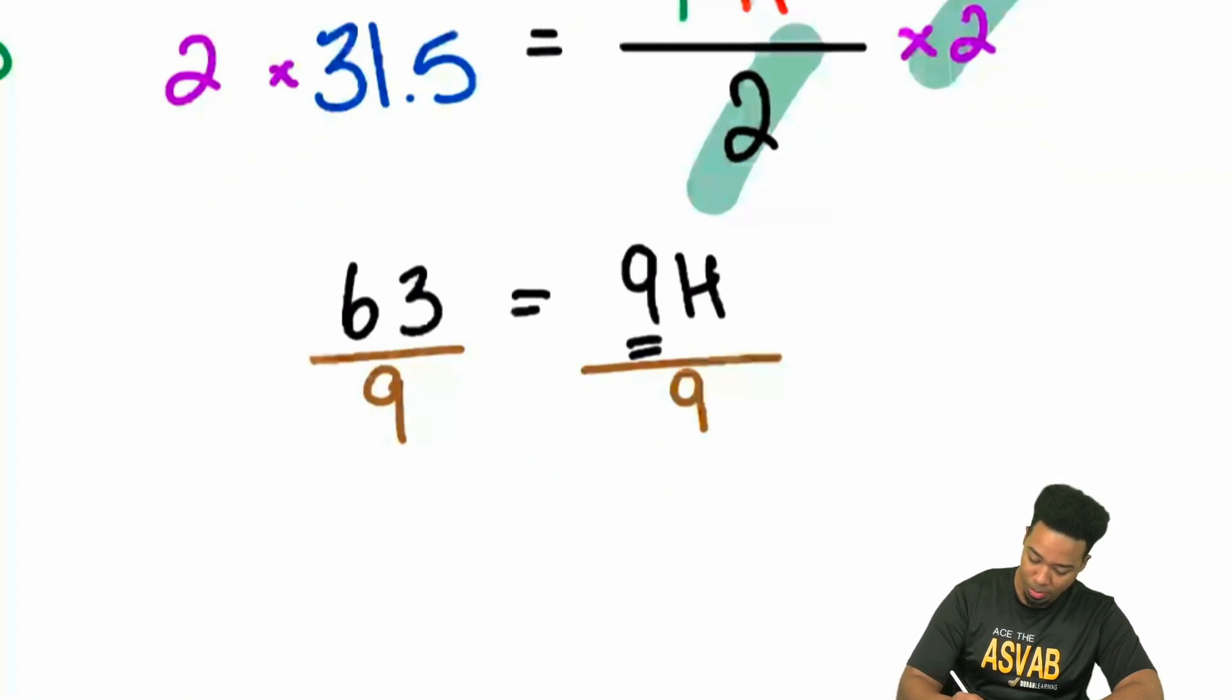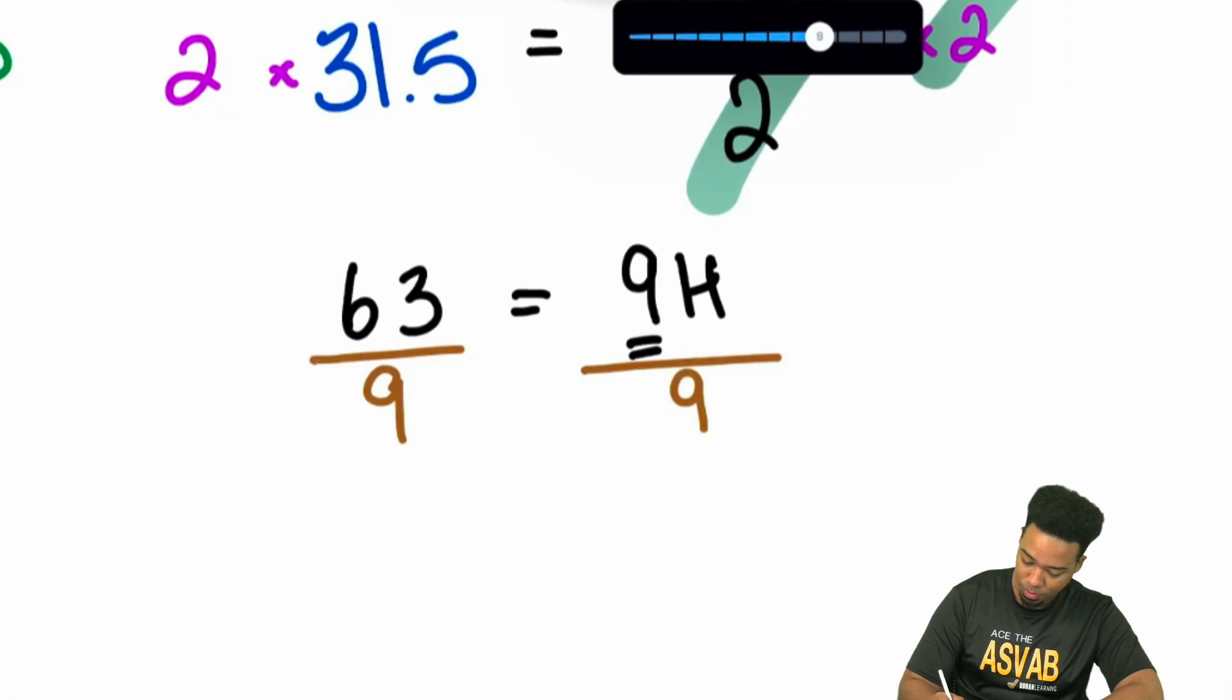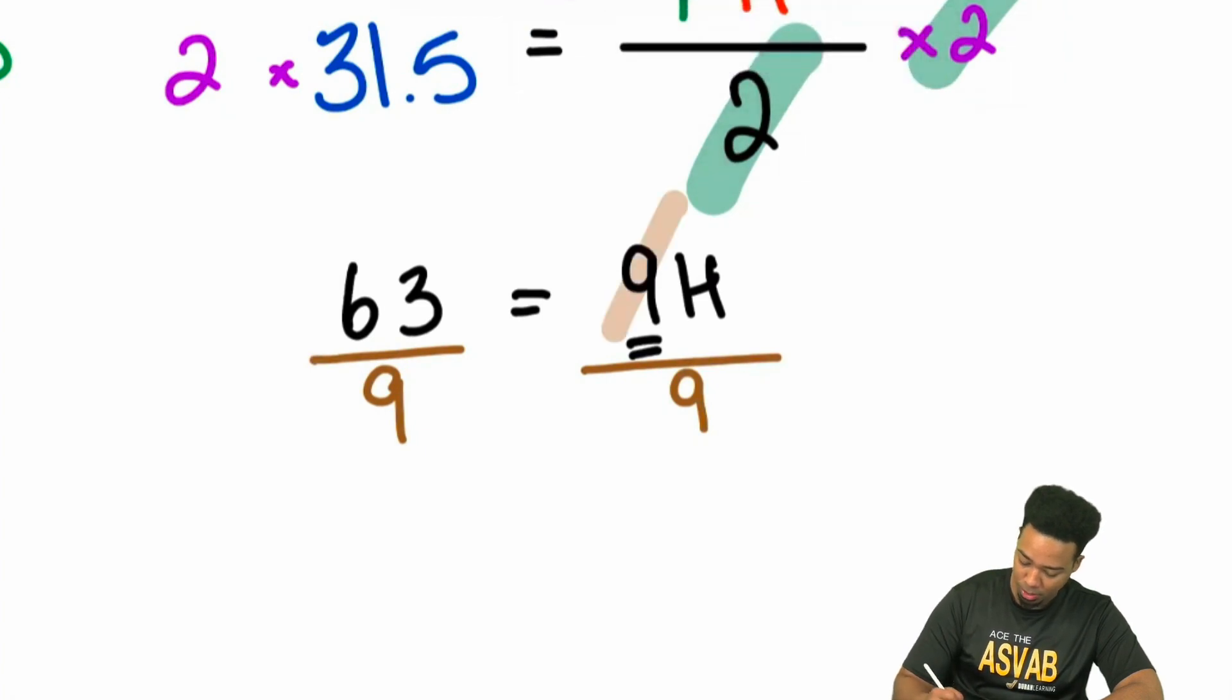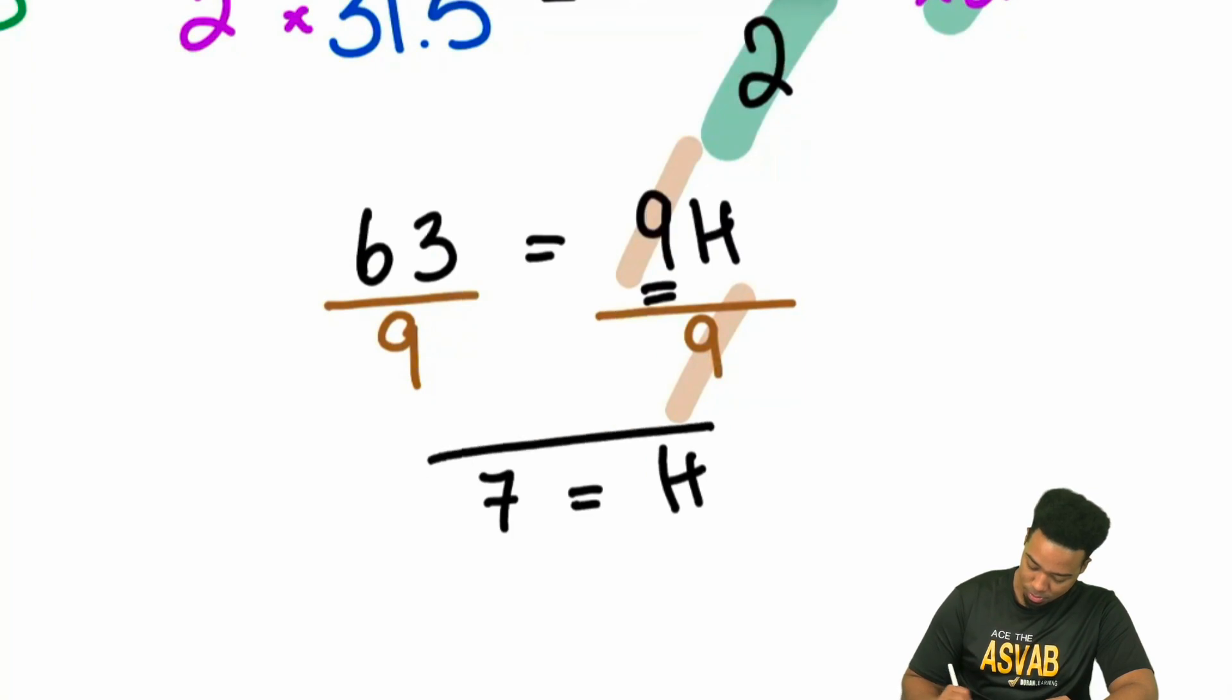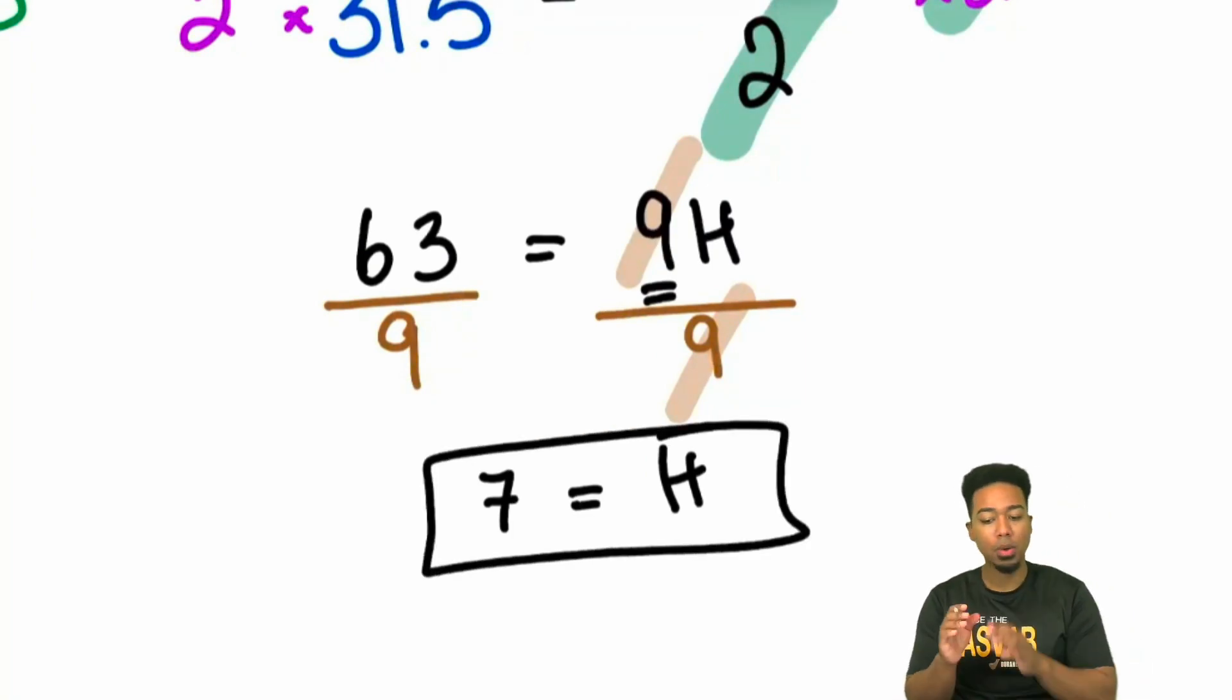And that's going to cancel out. Right there. Cancels out right there, giving us H equals 63 divided by 9, which is 7. And there we have it.